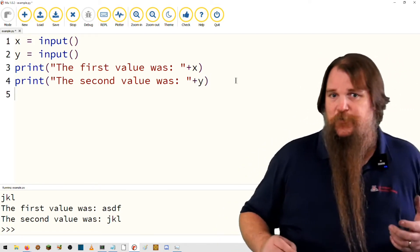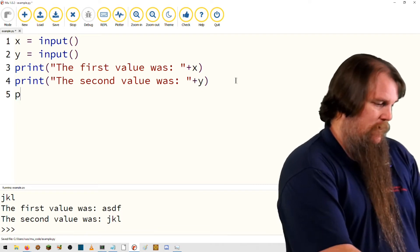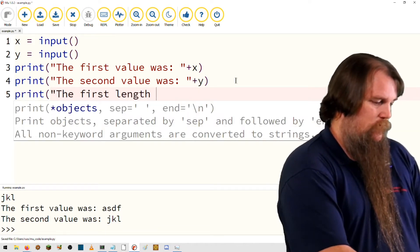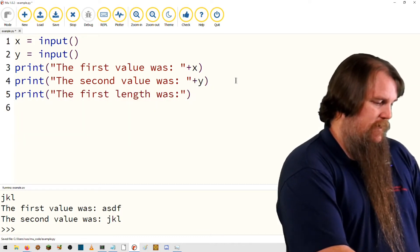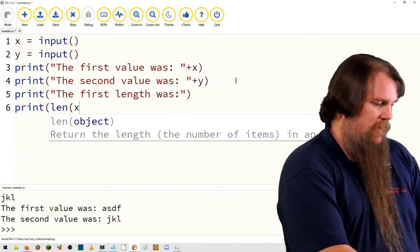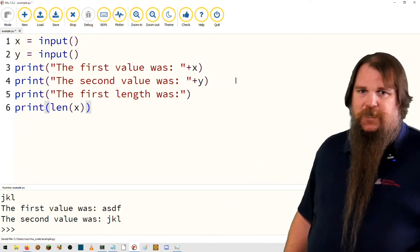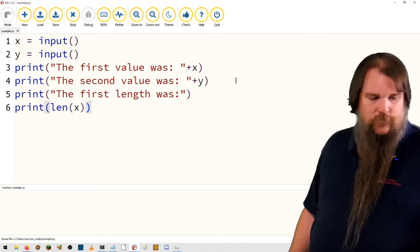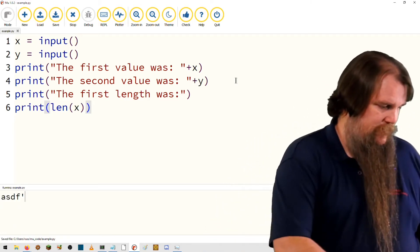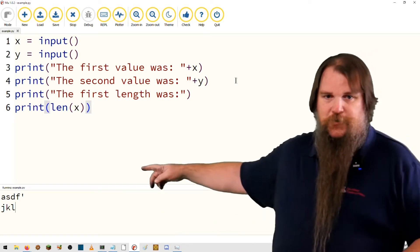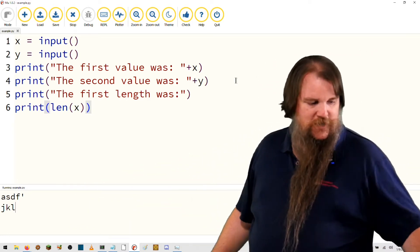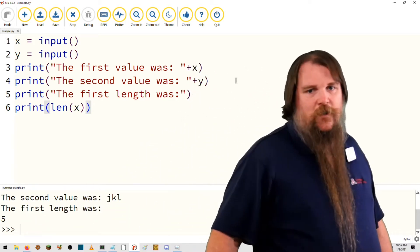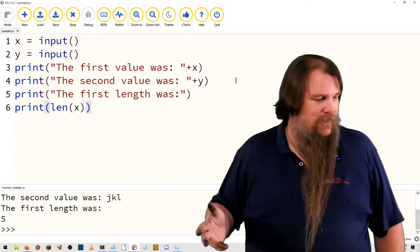Do you remember how to figure out the length of a string? For simplicity, I'm going to put this on two separate lines. Here, ASDF, JKL... I accidentally put an apostrophe there. You'll see that the first length was five. So ASDF apostrophe, that makes sense.